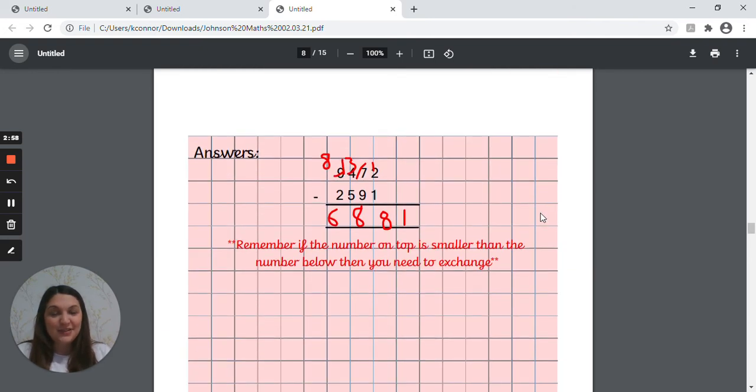Okay, and the answer's on screen for you now. So again, quite a bit of exchanging here. So two take away one left you with one. Seven take away nine you can't do it because seven is less than nine, so you'd have to exchange from the four, turn that into three, carry the one over, so you've got 17 take away nine which left us with eight. Then we'd have three take away five, which we can't do, so we need to exchange from the thousands column, turn that nine into eight, and carry that one over to the hundreds, so that would be 13 take away five, which left us with eight. And then eight take away two, which left us with six.